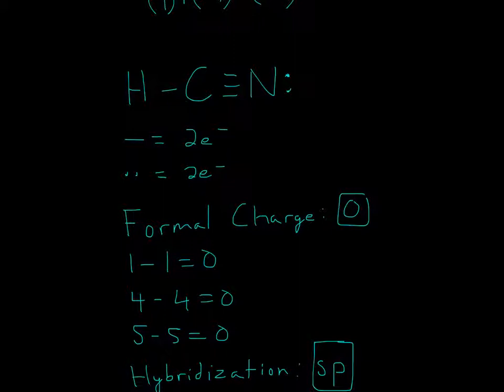Moving on to carbon, we have 1, 2, 3, 4. So 4 minus carbon's group number, which is 4. 4 minus 4 is 0.